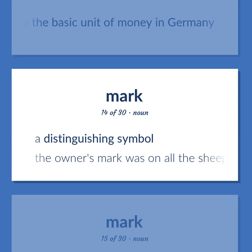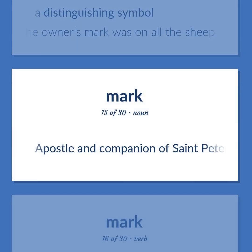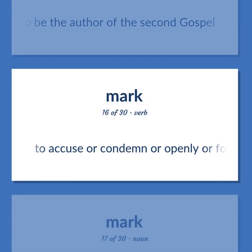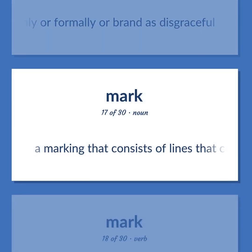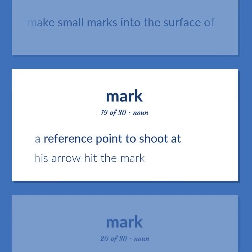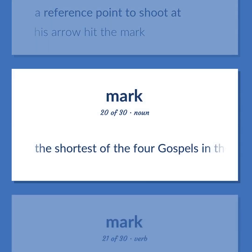Mark: A distinguishing symbol. Example: The owner's mark was on all the sheep. Apostle and companion of St. Peter, assumed to be the author of the second gospel. To accuse, condemn, or openly or formally brand as disgraceful. A marking that consists of lines that cross each other. Makes small marks into the surface of. A reference point to shoot at. Example: His arrow hit the mark. The shortest of the four gospels in the New Testament.